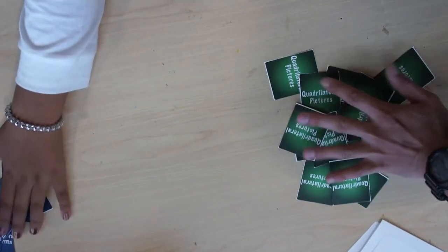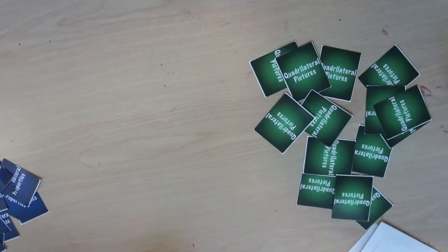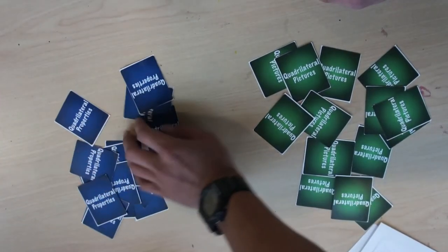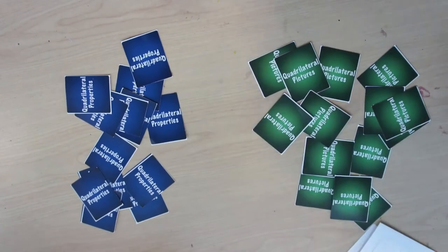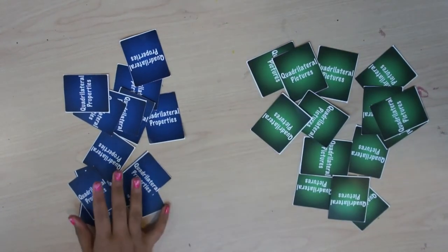At the beginning of the game, spread out the quadrilateral property cards and the quadrilateral picture cards in two separate messy piles. The youngest person starts by flipping over a quadrilateral property card. Players alternate between the two piles when flipping over cards as players move to the left.